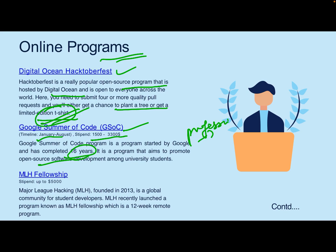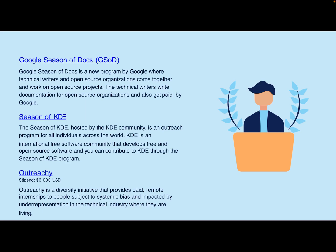Another program is MLH Fellowship, with a stipend of up to $5,000. MLH (Major League Hacking), founded in 2013, is a global community for student developers. The MLH Fellowship is a 12-week remote program; you enroll and based on your project you can receive up to $5,000. Another is Google Season of Docs, which is less well-known but very popular. Technical writers and open source organizations come together to work on open source projects — technical writers write documentation for open source organizations and get paid by Google.